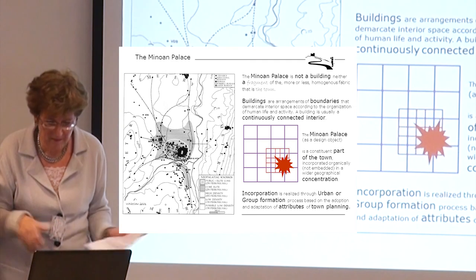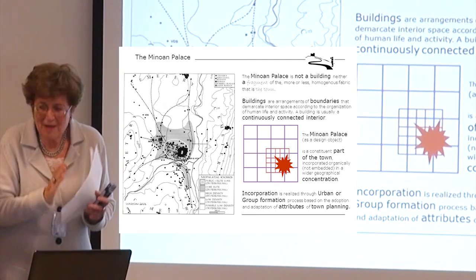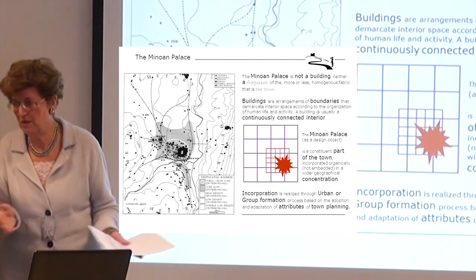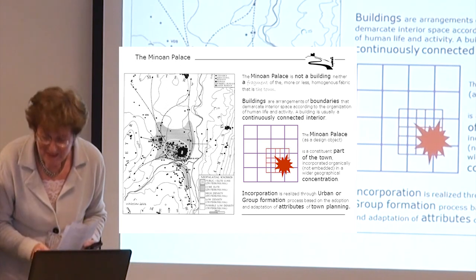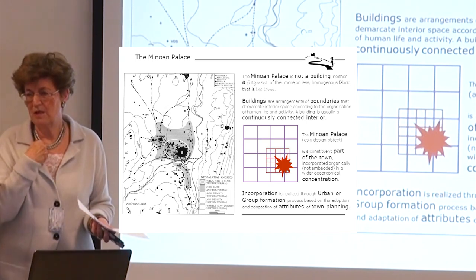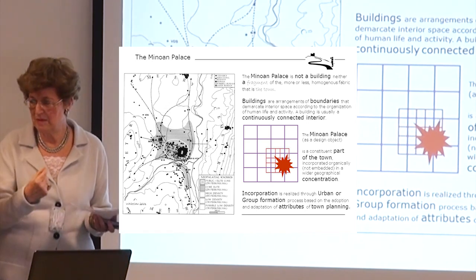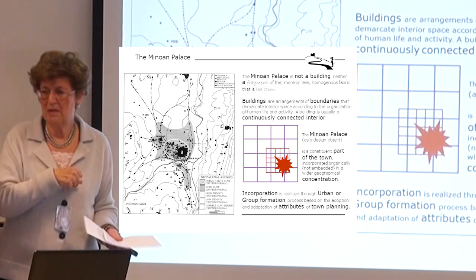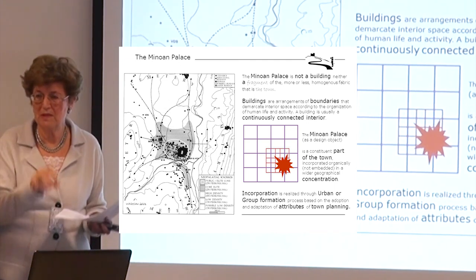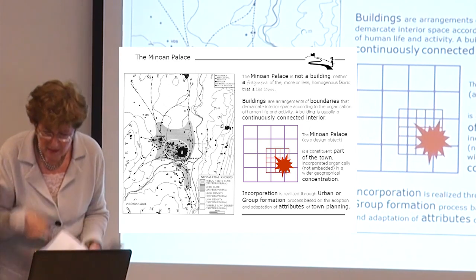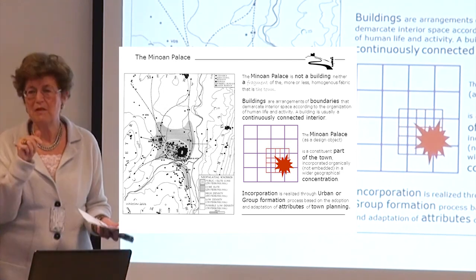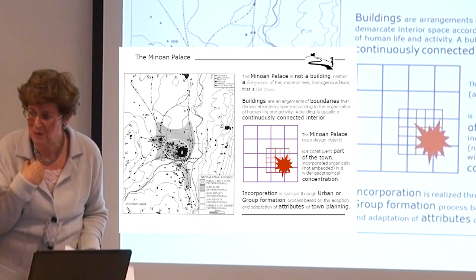As a design object, I would say the palace is a constituent part of the town — incorporated organically, not embedded, in a wider geographical concentration. I insist on the word 'incorporated' and not 'embedded.' A building can be embedded; a palace in Near Eastern societies is embedded. But the Minoan palace is incorporated. And this incorporation is possible because it is, from the point of view of architectural design, the result of what I call an urban group formation — which is the adaptation of attributes of town planning.